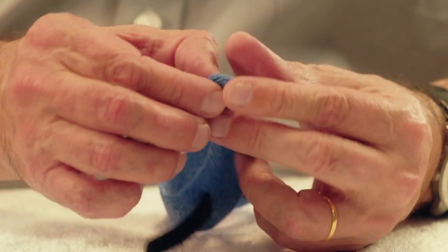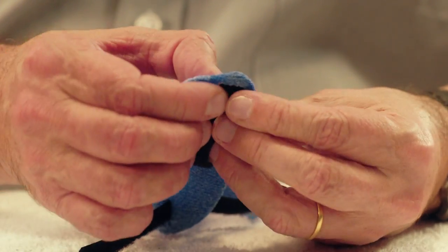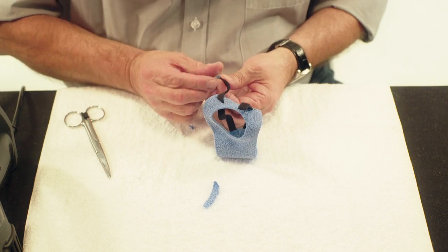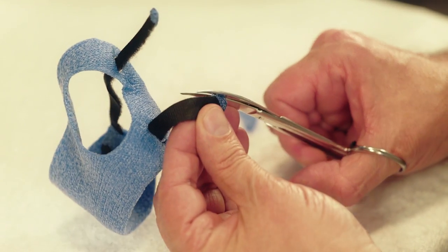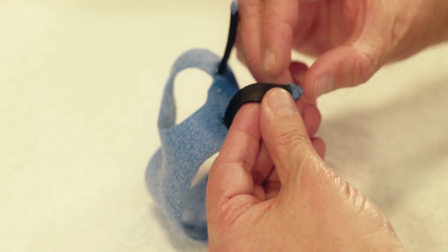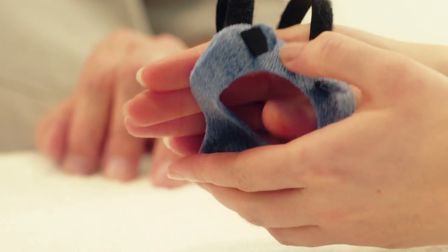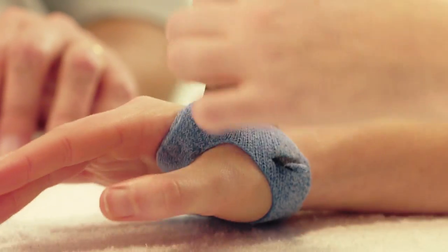Heat two pieces of Orficast with a heat gun and carefully seal the edges so they do not slip back out through the slit openings. Cut away any excess material. Try the orthosis on the patient and check the fit.